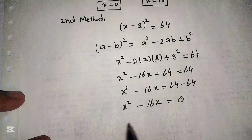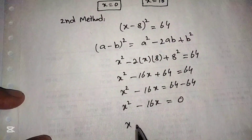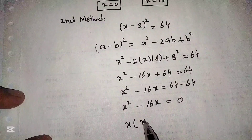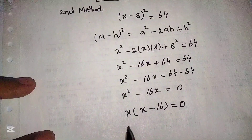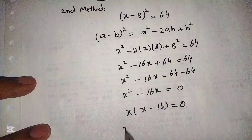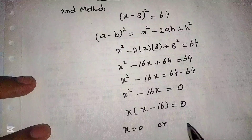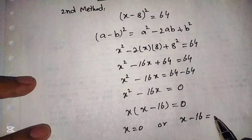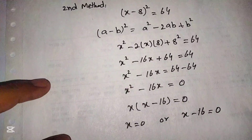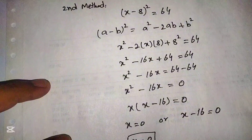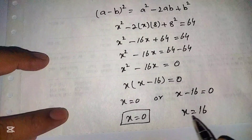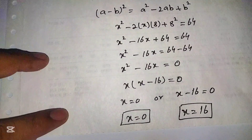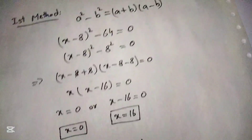Taking x as common from x² - 16x, we get x(x - 16) = 0. Again, either x = 0 or x - 16 = 0, giving x = 0 or x = 16. This is the solution of the given equation using the second method. Now we will check the solution to verify its correctness.